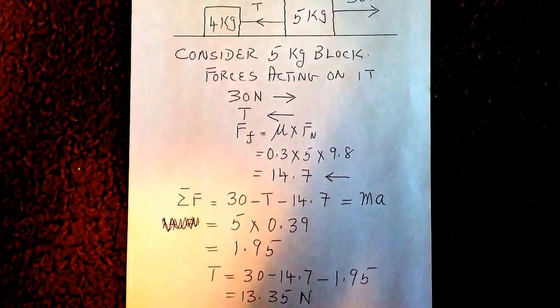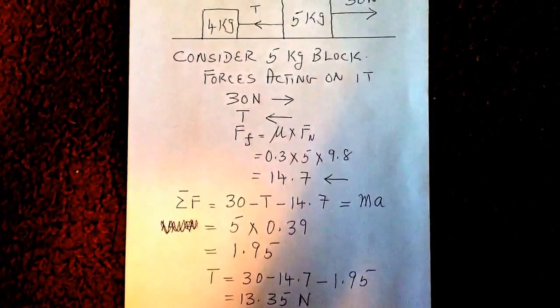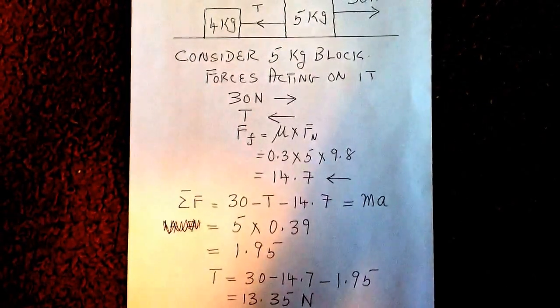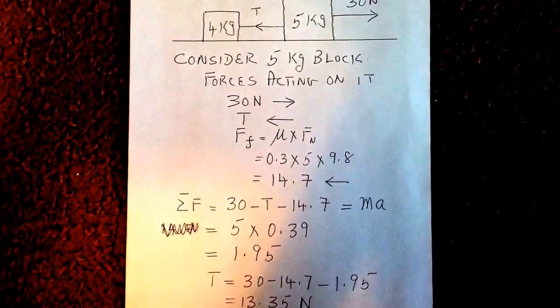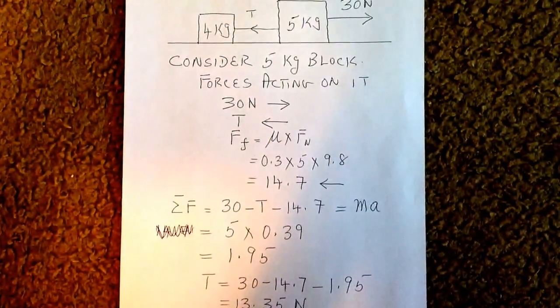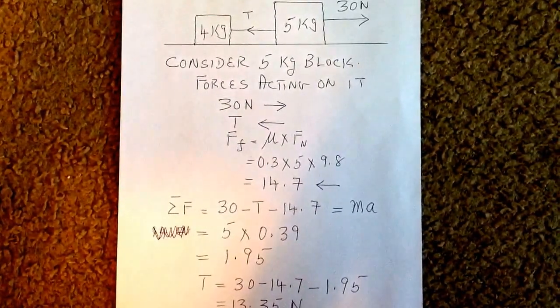Now the net force acting in the right direction is 30 minus T minus 14.7 and this must equal mass times acceleration. Mass is 5 kilograms and the acceleration we already found out was 0.39 meters per second squared.